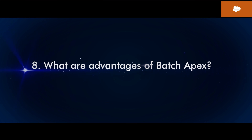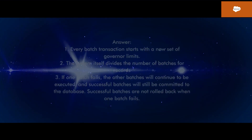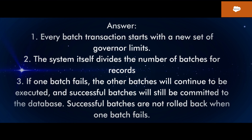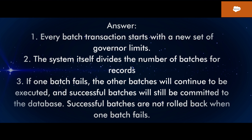Q8: What are the advantages of batch Apex? 1. Every batch transaction starts with a new set of governor limits. 2. The system itself divides the number of batches for records. 3. If one batch fails, the other batches will continue to be executed, and successful batches will still be committed to the database. Successful batches are not rolled back when one batch fails.